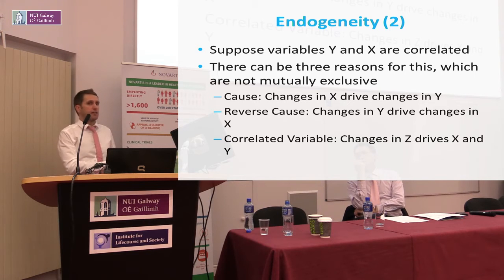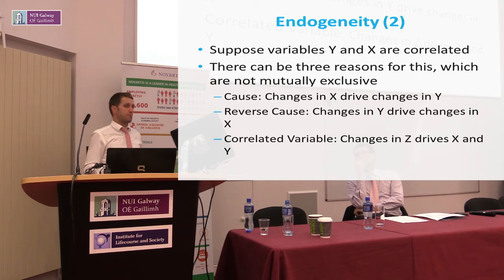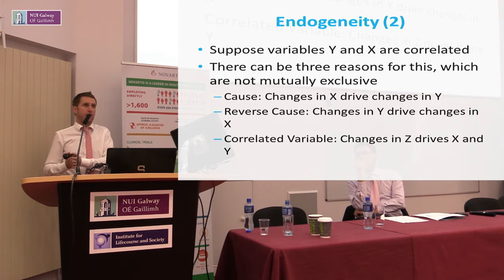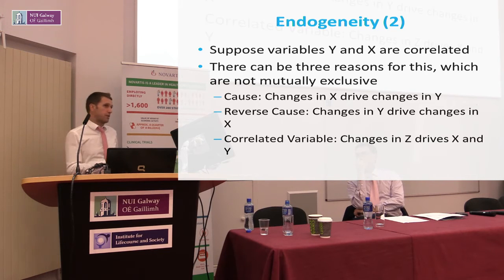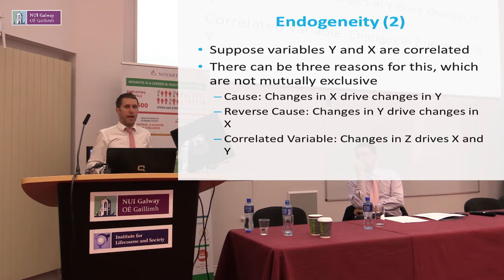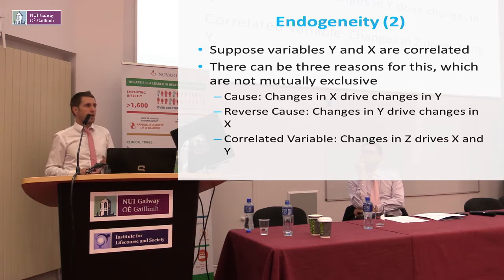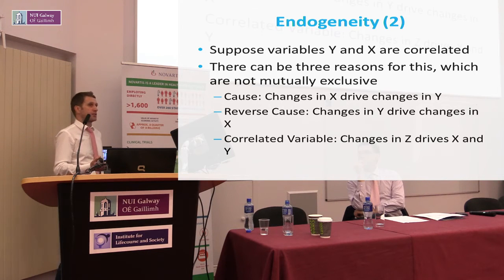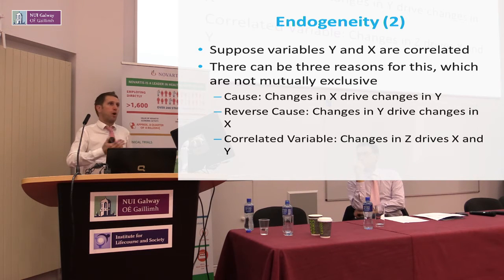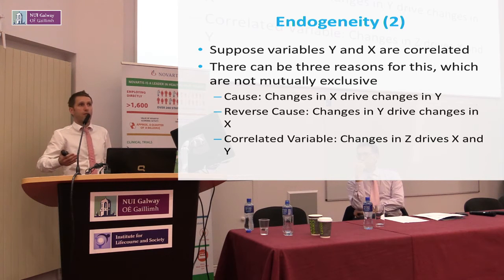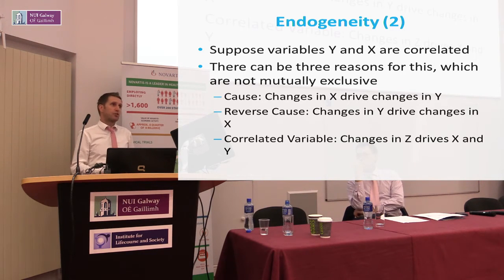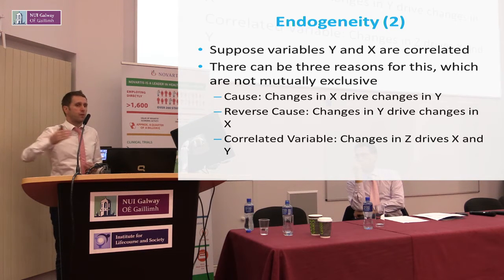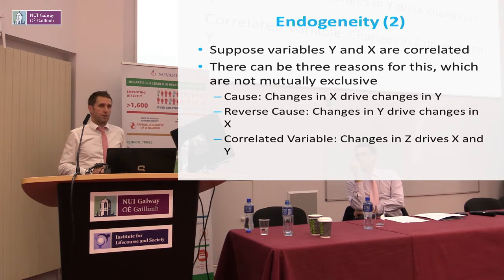In a situation where two variables — y health and x income — are correlated, there can be three reasons, which are not necessarily mutually exclusive. First, changes in income could drive changes in health — direct causality. Second, we could have reverse causation: changes in health drive changes in income. For example, in a developing country context, an individual's health may directly impact their productivity and thus their income, or ill health in childhood may impact human capital accumulation and later earnings.